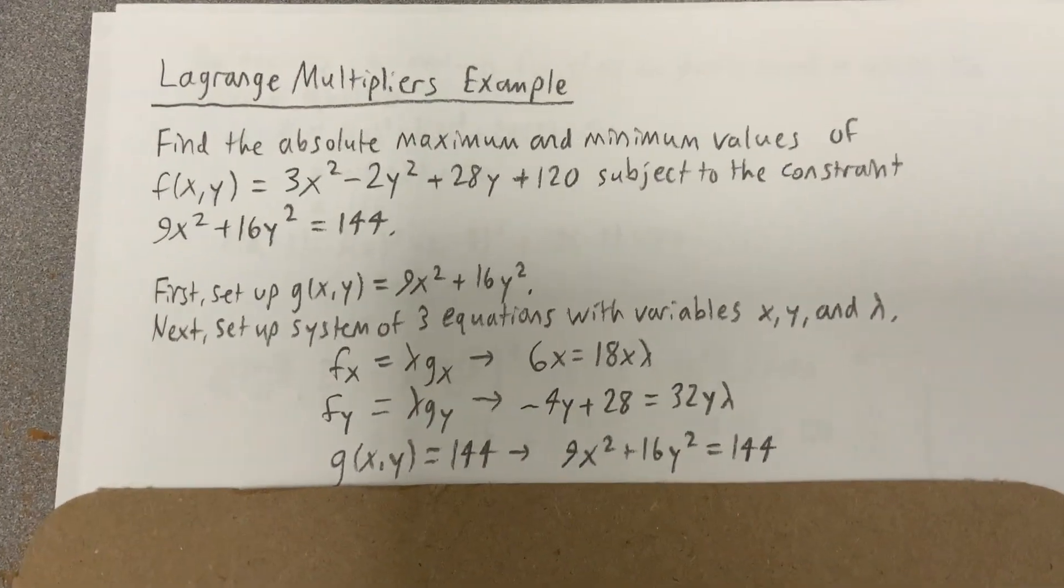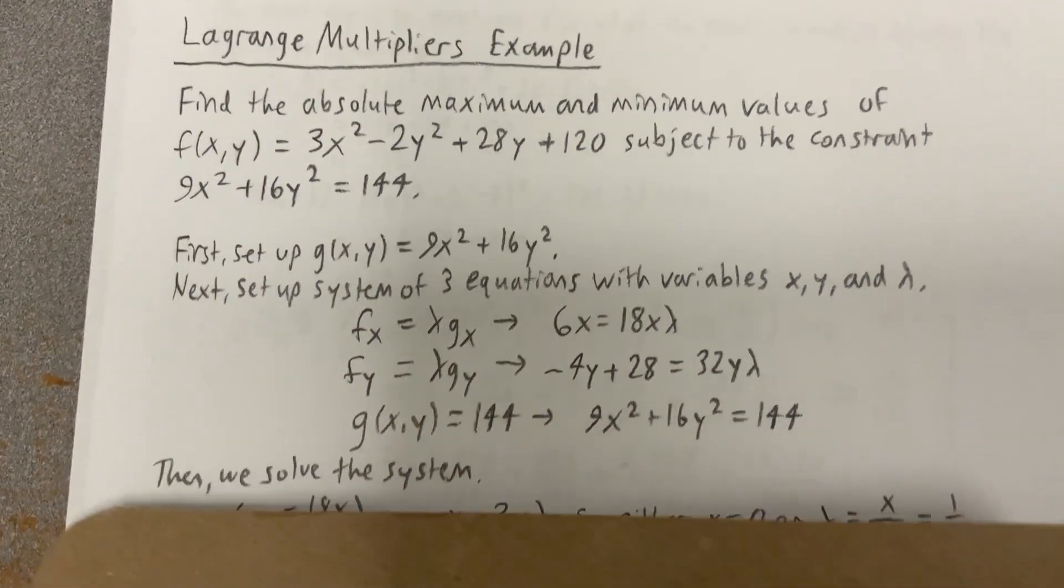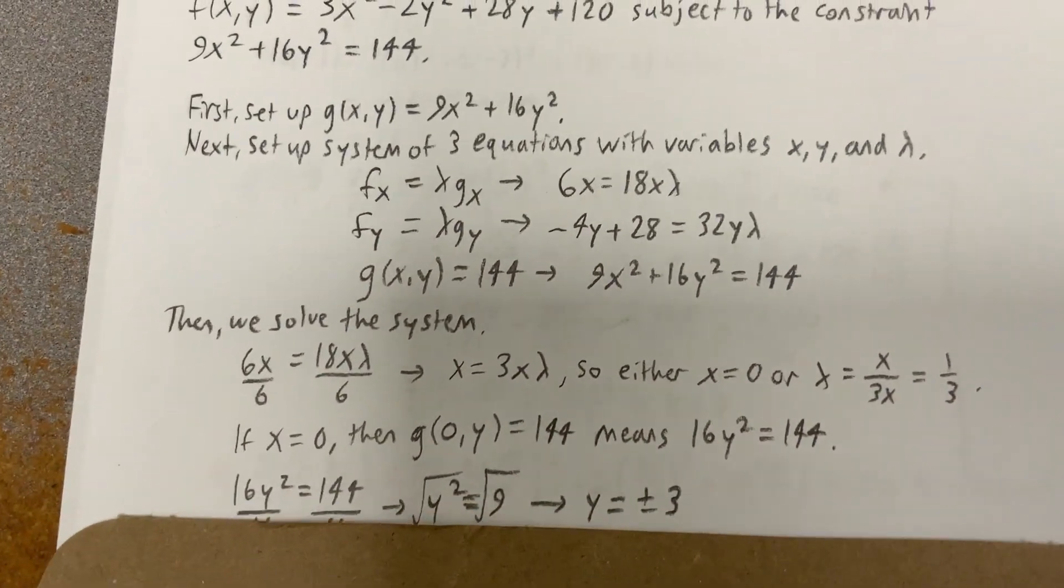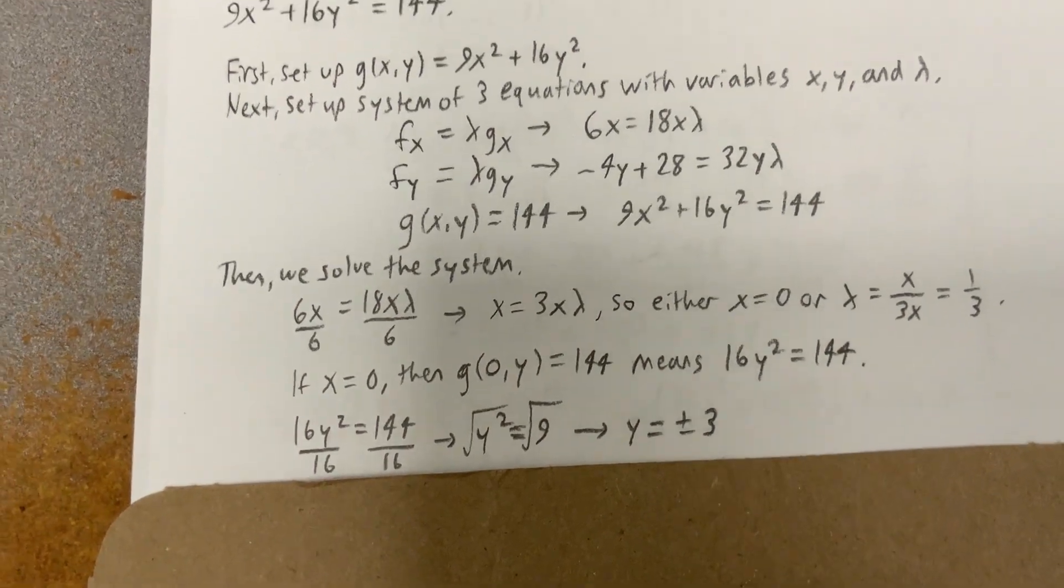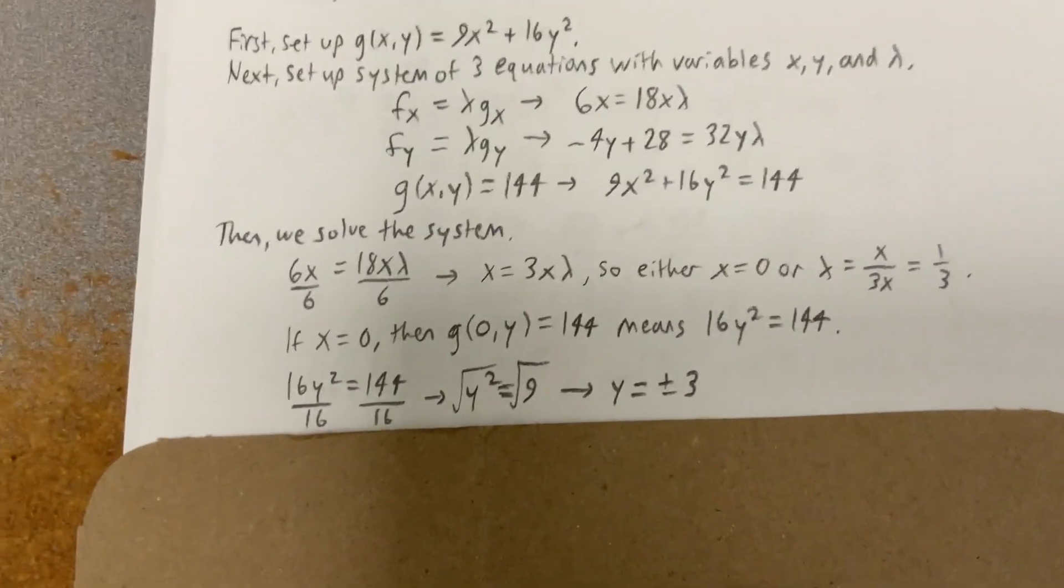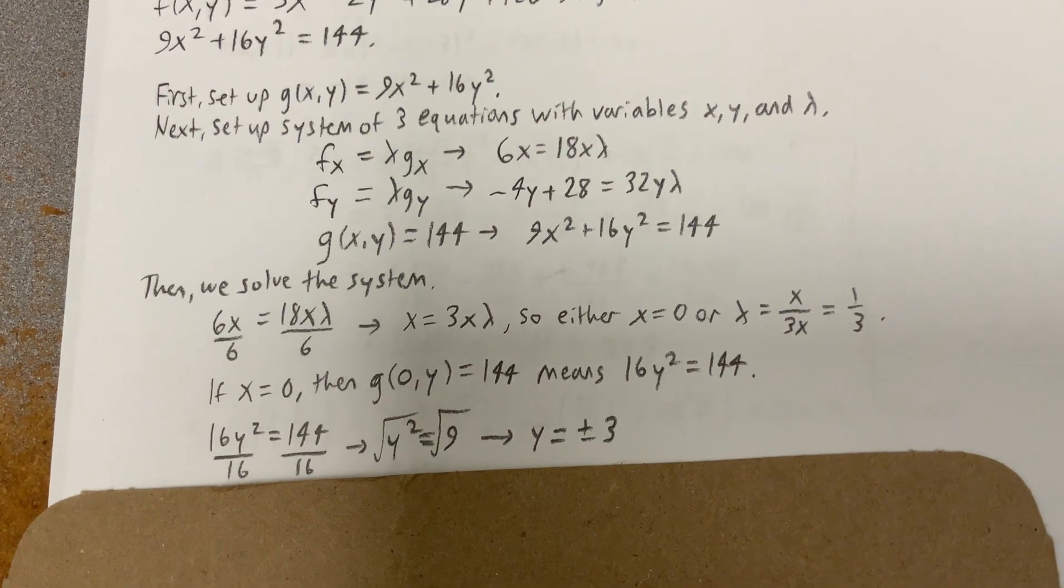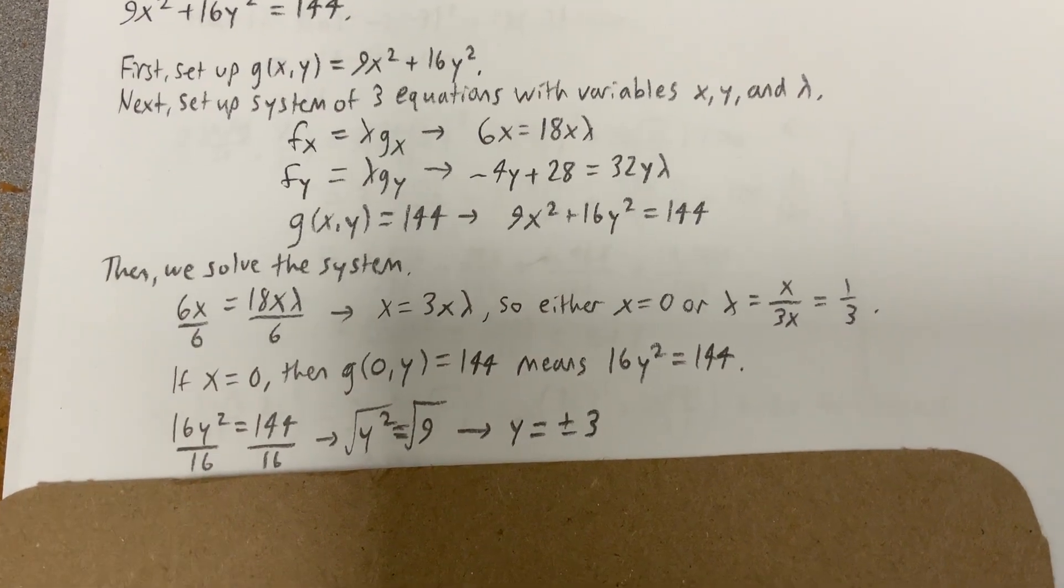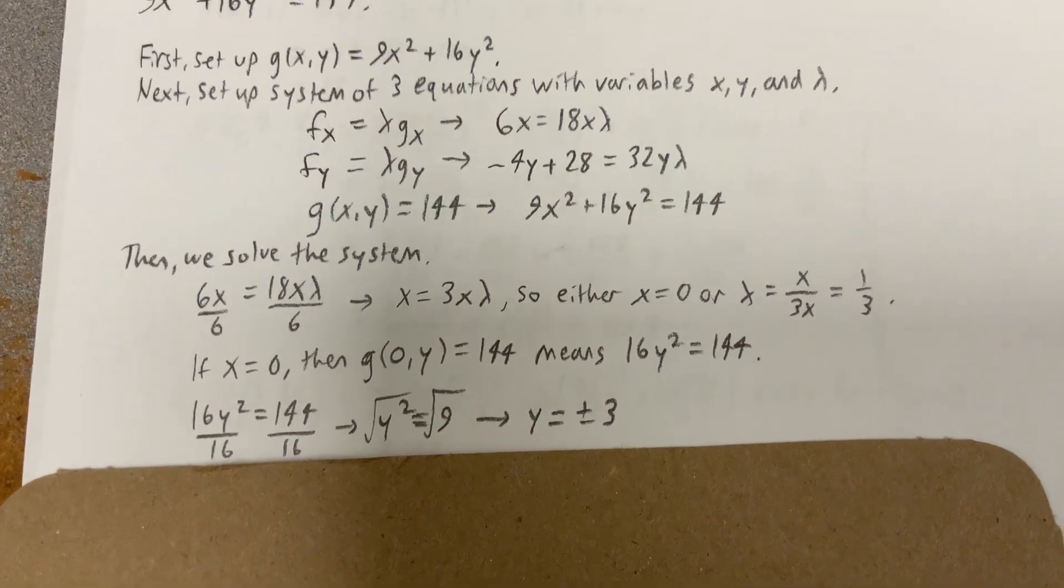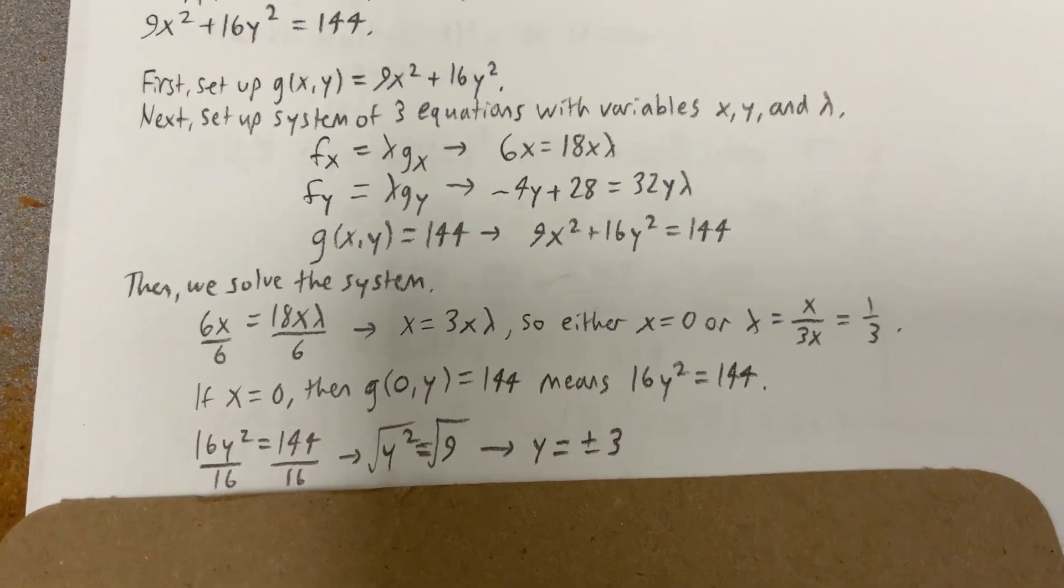Then we need to solve this system of equations. So let's go ahead and pull down here. So the first thing that will happen here, we get 6x = 18xλ, dividing by 6x gives 3xλ. So either x will be 0, or we'll show that λ has to be 1/3.